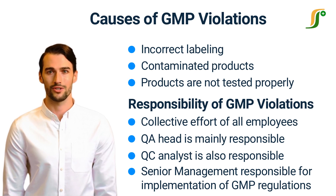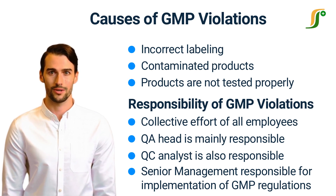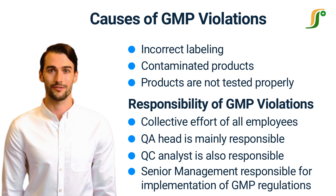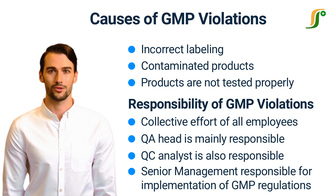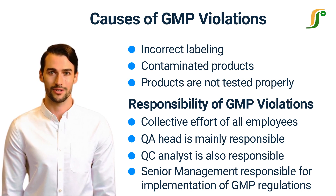To minimize the chances of GMP violations in the facility, a strong quality management system must be implemented and employees must be trained properly to carry out their duties. If anyone in the facility experiences any GMP violation, they must speak to the plant manager or quality assurance head to resolve the issue. All employees should be well-trained and must know all GMP recommendations.